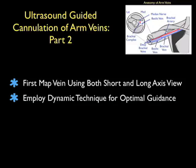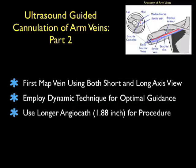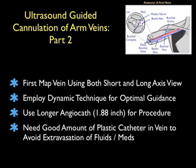As we discussed in Part 1 of this module, we first want to map out the vein using both short and long axis views, and we'll employ a dynamic technique for optimal guidance of the catheter down to the vein. We want to use a longer angiocath for the procedure, preferably 1.88 inch or longer, as we need a good amount of the plastic catheter in the vein to avoid extravasation of fluids or meds during resuscitation of the patient.